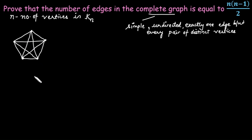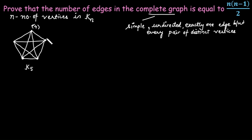Let's take the example of the complete graph K5, which has 5 vertices. Each vertex is connected to the other 4 vertices — for example, the first vertex connects to the second, third, fourth, and fifth. Similarly, every other vertex connects to 4 others. So the degree of each vertex in K5 is 4, and the total degree is 4 + 4 + 4 + 4 + 4 = 5 × 4 = 20.